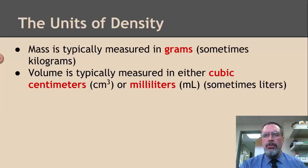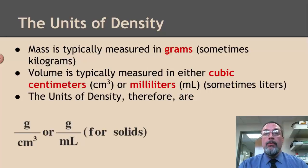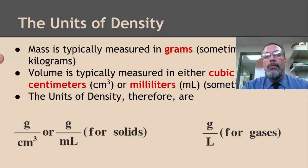So because we measure mass in grams usually and volume in cubic centimeters or milliliters, then the units of density are going to be, therefore, either grams over cubic centimeters or grams over milliliters, if we're talking about solids. And if we're talking about gases, it's grams over liters. Now I want you to think about that for a second. Why would the density of gases be reported with a different kind of unit? Well, gases take up a lot of space, but there's not a whole lot of matter there. There's not a whole lot of mass there. So if we were to use grams per cubic centimeter or grams per milliliter for a gas, the number would be very, very small. So it's more convenient sometimes to just use the mass of a larger volume of gas so that it's a more manageable number. That's why it's done that way.